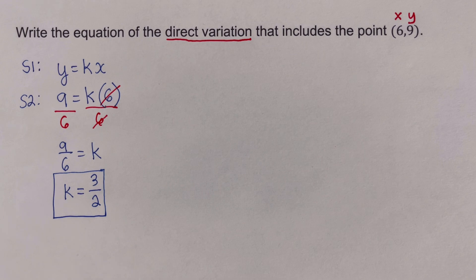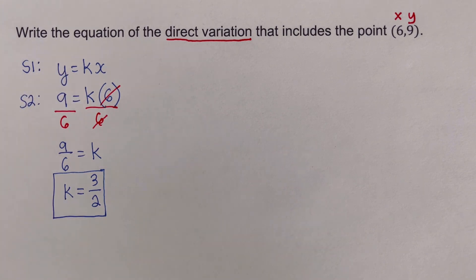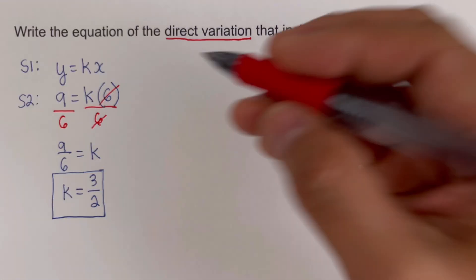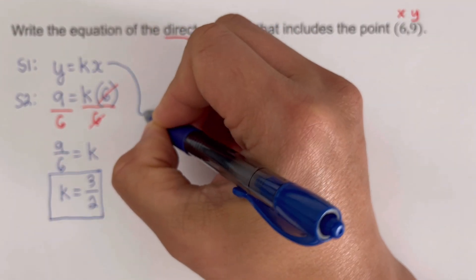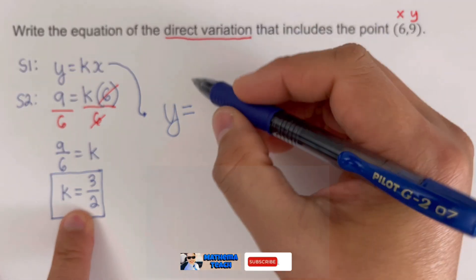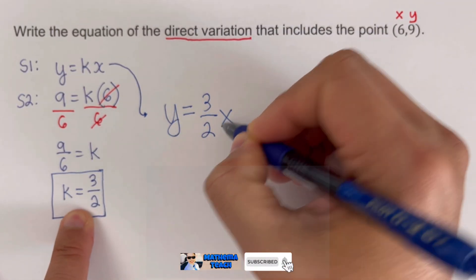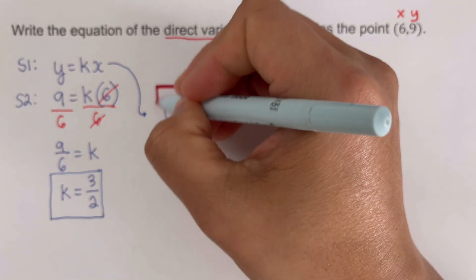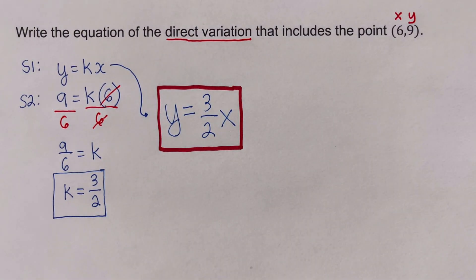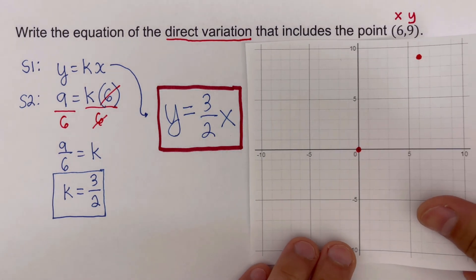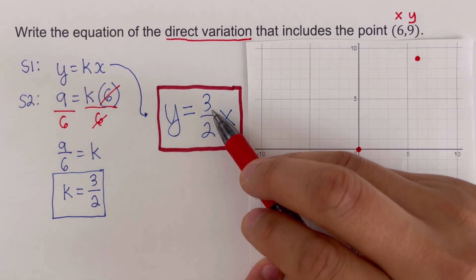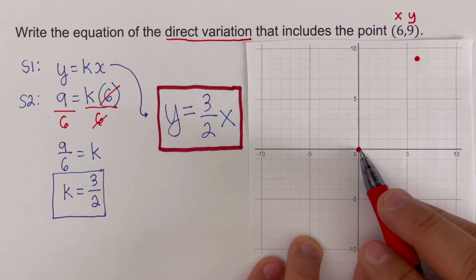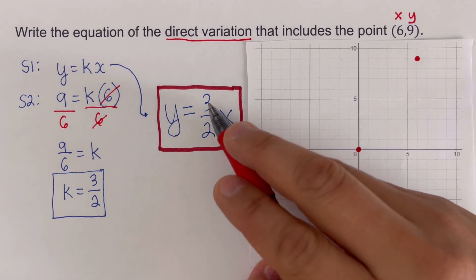For the third step, we plug the value of k back into the equation, and that gives us the equation of the direct variation. The final equation is y equals (3/2)x. Notice that from the point of origin, the slope of 3 over 2 confirms that the point (6, 9) is part of the graph of this equation.